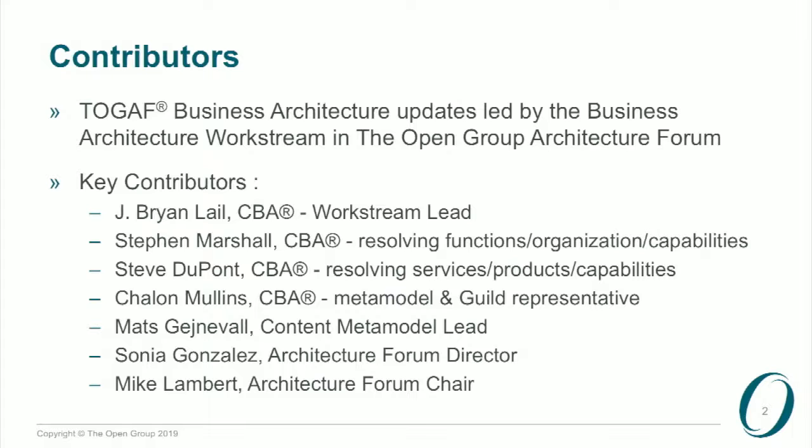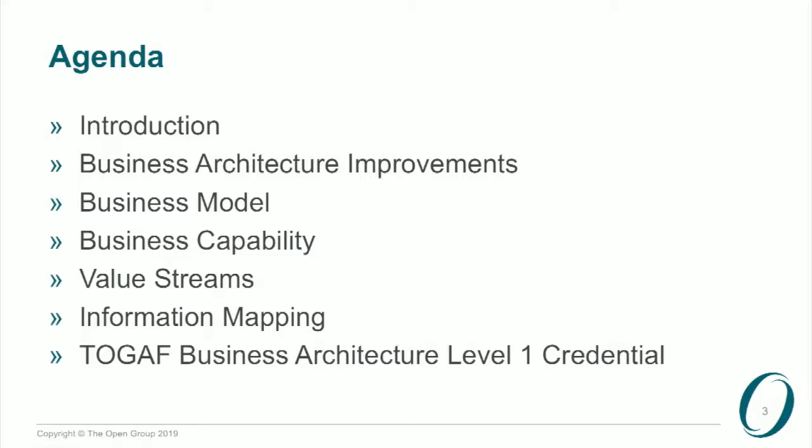So, business architecture. What I'm going to go through is a little introduction to set the scene, then talk through what are the improvements, the areas we're focused on, and what's been produced. I'll give a couple of illustrations as to how that's useful, and then focus on three main areas: business modelling, business capabilities, value streams, and information modelling and mapping.